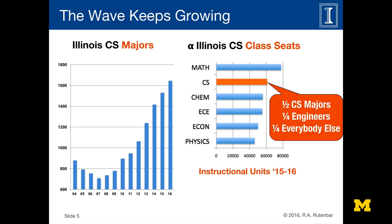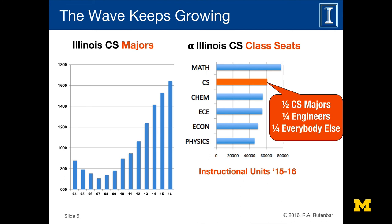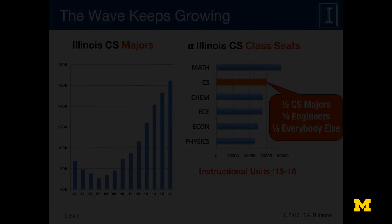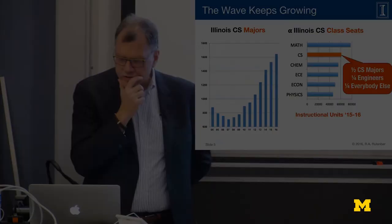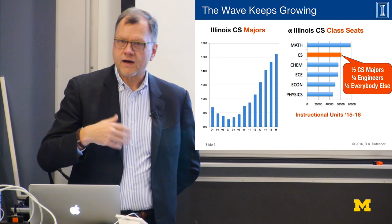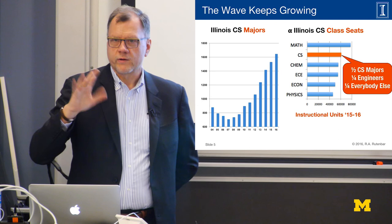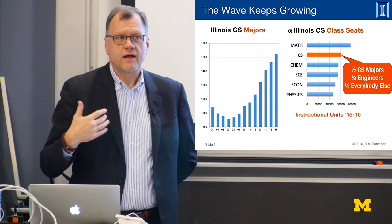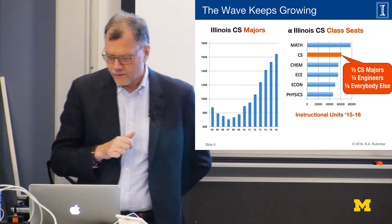This is what CS majors look like — the bars represent credit hours, proportional to butts in seats. As of the last time I did this data, the computer science unit was the second largest teaching unit on campus, having crushed through chemistry, physics, economics, psychology, and all these other things. Only math was larger, and we have a bet with the math department head about when we'll catch up — but people in our front door also take math, so both bars are moving at the same time.